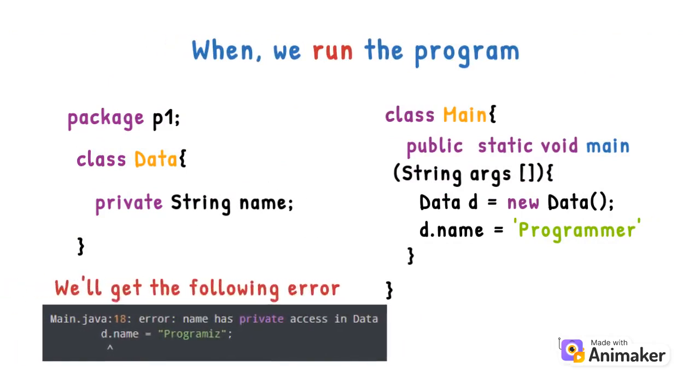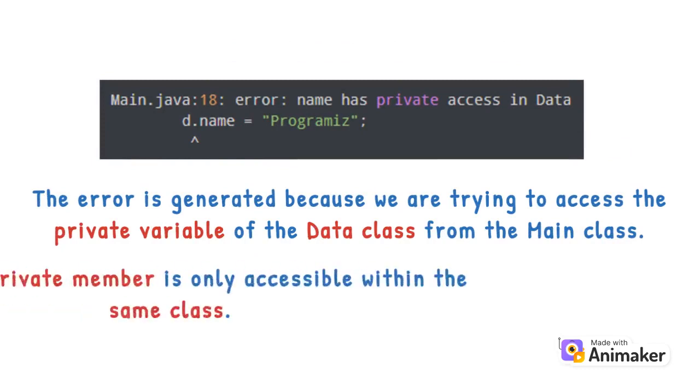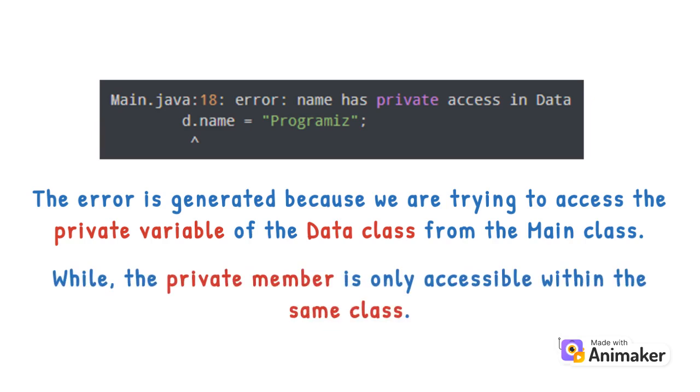The error is generated because we are trying to access the private variable of the data class from the main class, while the private member is only accessible within the same class.